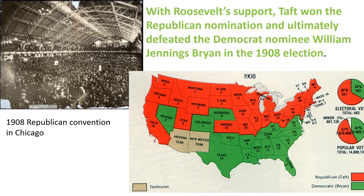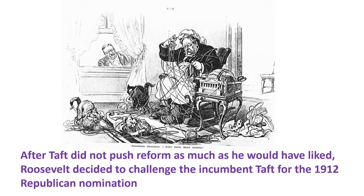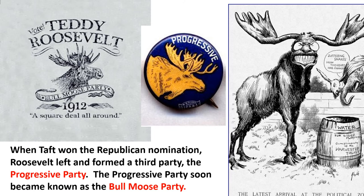Here you can see the GOP convention in Chicago in 1908. Four years later, after Taft had not pushed reform as much as Roosevelt would have liked, Roosevelt decided to challenge the incumbent Taft for the 1912 Republican nomination. A cartoon shows Roosevelt looking in and Taft sitting there all screwed up. But Taft had the big business money and the power of incumbency, so Taft still won. Roosevelt, not a wilting flower, decided that if he couldn't get the Republican nomination, he would run in the 1912 general election as an independent — a third party — and called this party the Progressive Party. Roosevelt was often joked about as a bull moose, and not surprisingly the Progressive Party soon became known as the Bull Moose Party.